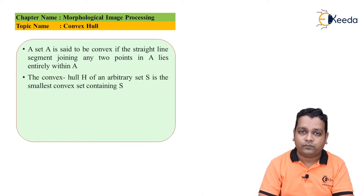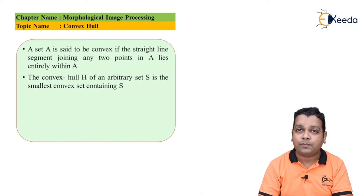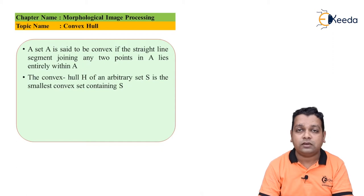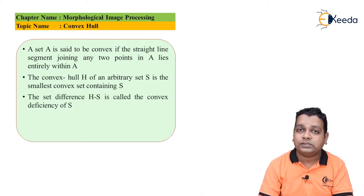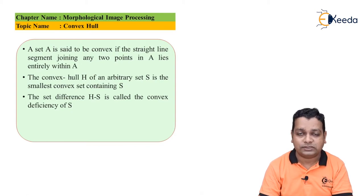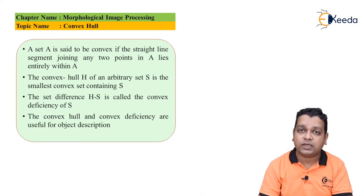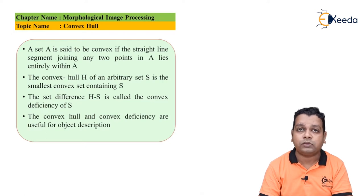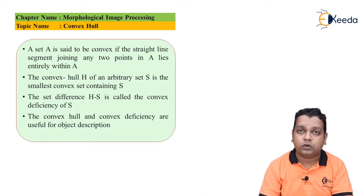The convex hull, represented by capital H, for an arbitrary set capital S — the total local region — is the smallest convex set containing capital S. The set difference H minus S is called the convex deficiency of the set capital S. The convex hull and the convex deficiency are now very helpful for the purpose of object description, and further for object segmentation.